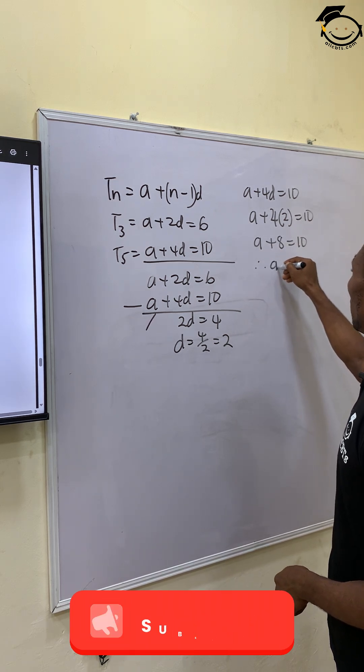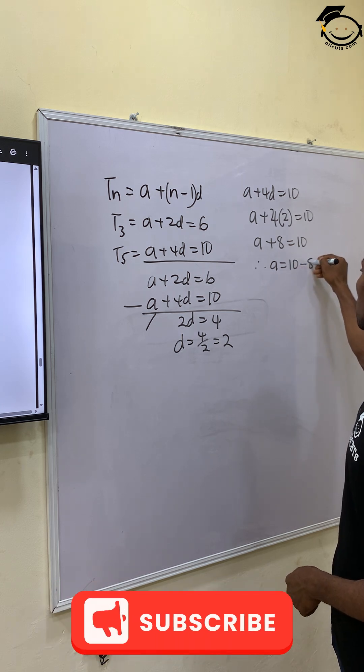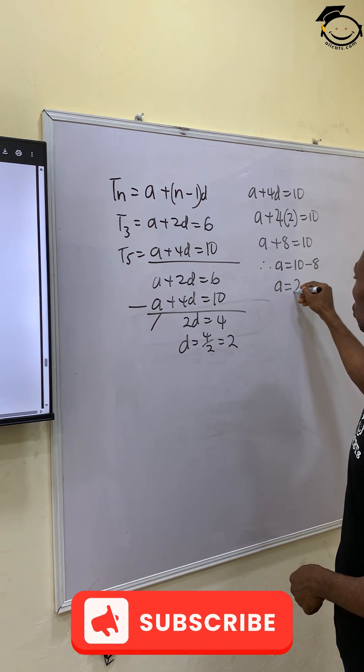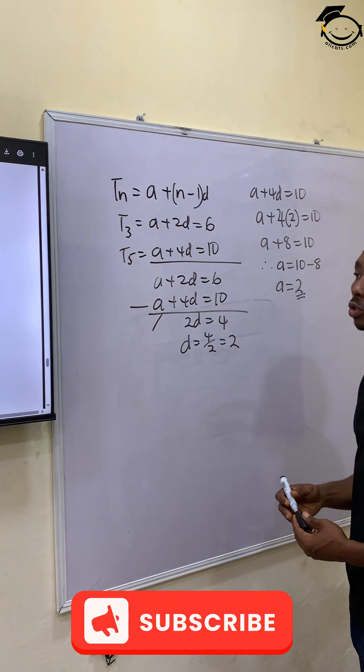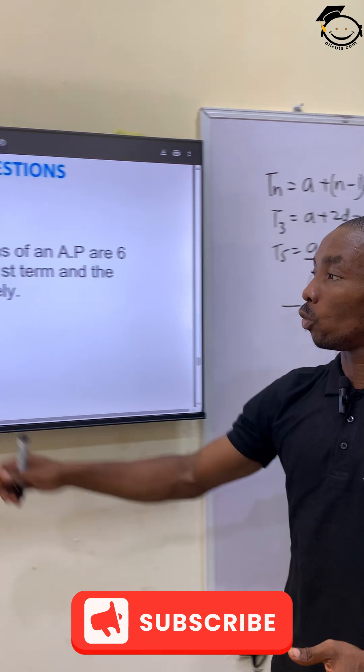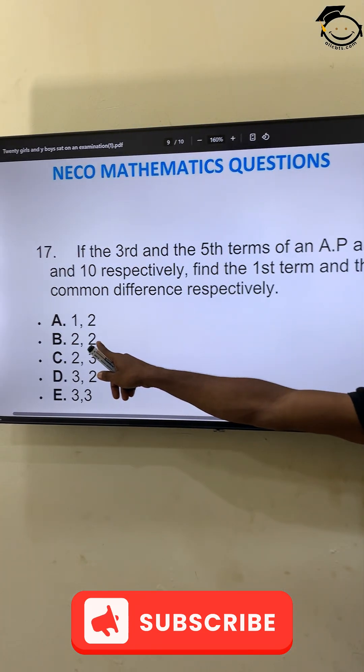Therefore, A equals 10 minus 8, which is 2. So the values of A and D are both 2, giving us option B.